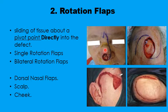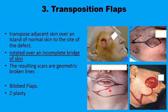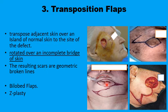Then we move to rotation flaps — either single rotation like the dorsal nasal flap, the scalp flap, or the cheek rotation flap — or a double rotation like the O-to-Z type of plasty usually used in the scalp. When the flaps have to cross intervening tissues in order to lie in a new position, they are called transposition flaps. Examples include bi-lobed flaps and cheek flaps.